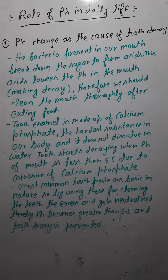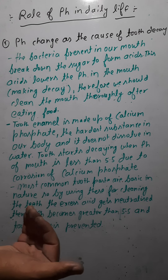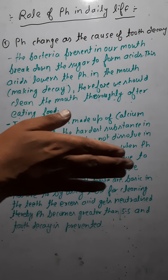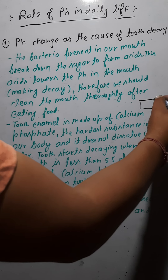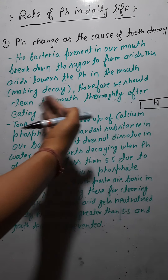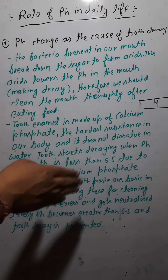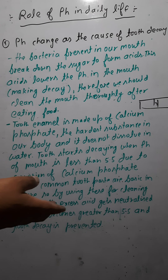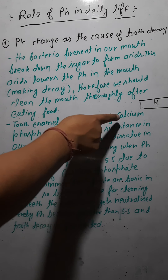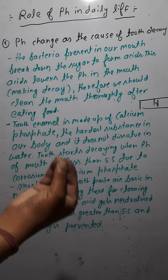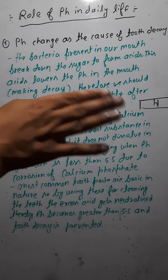When bacteria break down sugar, acid increases in our mouth, and this acid corrodes the calcium phosphate that makes up tooth enamel. If pH inside our mouth becomes less than 5.5, tooth decay starts.